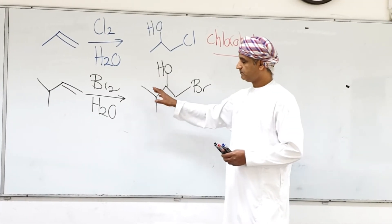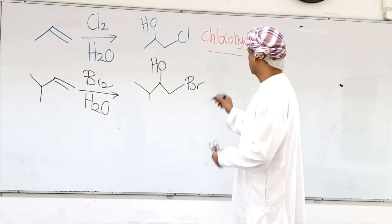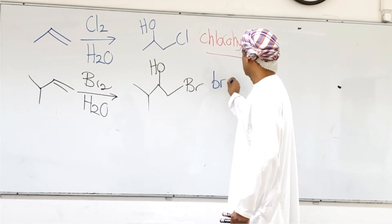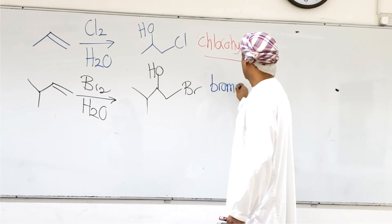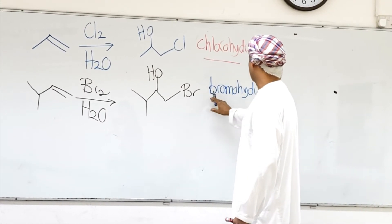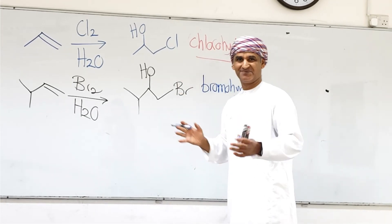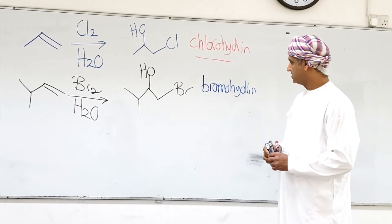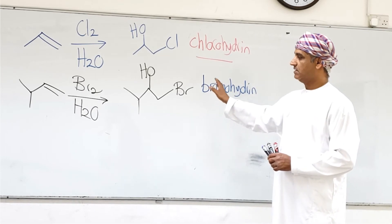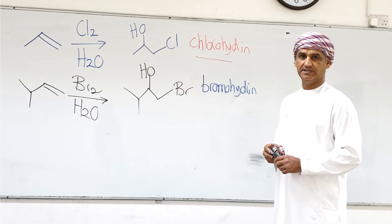And OH from water will go into carbon with less hydrogens or more alkyl substituents, following Markovnikov's rule. You see, in this bromo hydrin, let's also write the name of this compound in general. Okay. This is bromo hydrin, this is chloro hydrin. The general term is halo hydrin.